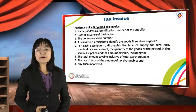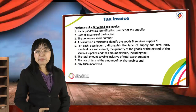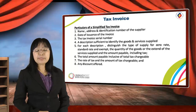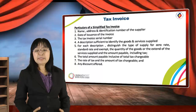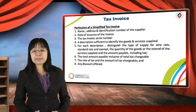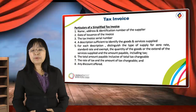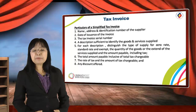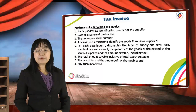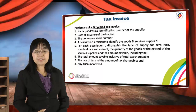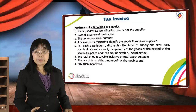Tax invoice. The particulars of a simplified tax invoice include: name, address, and identification number of the supplier; date of the invoice; the tax invoice serial number; a description sufficient to identify the goods and services supplied; for each description, the type of supply — zero rate, standard rate, or exempted; the quantities of goods or extent of services supplied; the amount payable including tax; the total amount payable inclusive of tax; the rate of GST and the amount of GST chargeable; and any discount offered. All these items appear in a formal tax invoice.